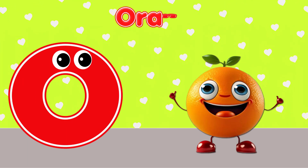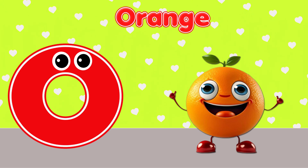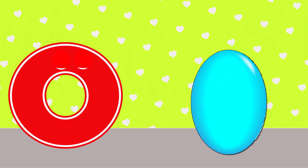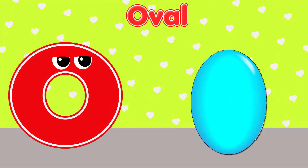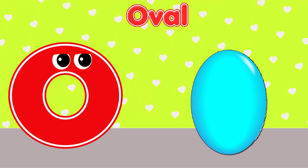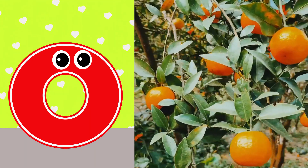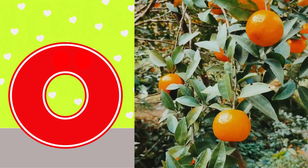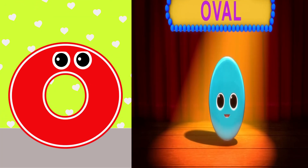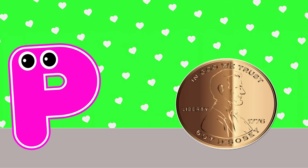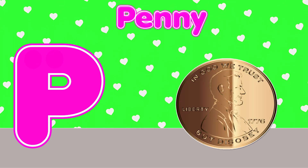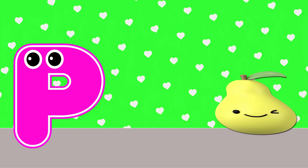O is for Orange. O-O-Orange. O is for Oval. O-O-Oval. O is for O-O-Orange. O is for O-O-Oval. P is for Penny. P-P-Penny. P is for Pear. P-P-Pear.